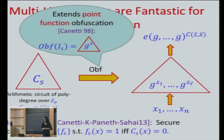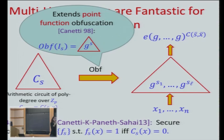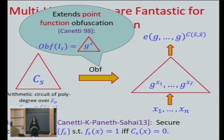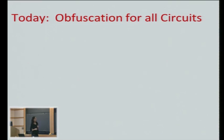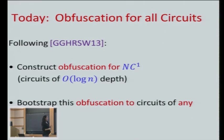We have a richer algebraic structure, and it gives us richer families of functions. There's no new ideas here, just a richer structure. If you can have T as big as you want, you won't get really a one-way encoding. Today I want to tell you more about obfuscations for all circuits. I'm following the work of Garg et al. and we're going to improve on that. What they did: they first construct an obfuscation for just NC1 circuits — Boolean circuits of depth order log n, where n is the input size, so shallow circuits. Then they show how to bootstrap it to get obfuscation for all circuits.